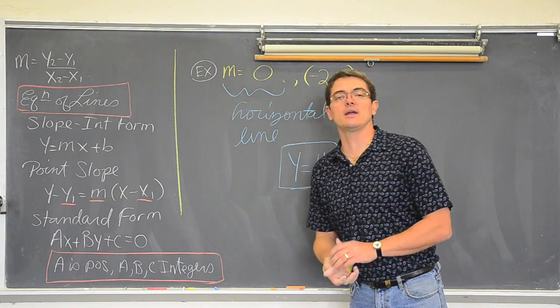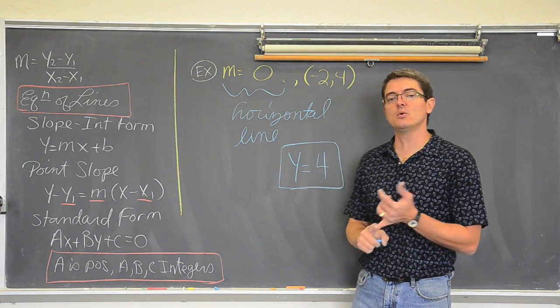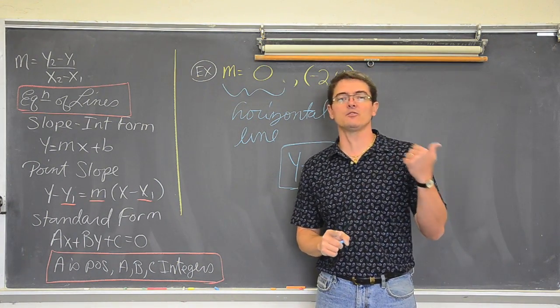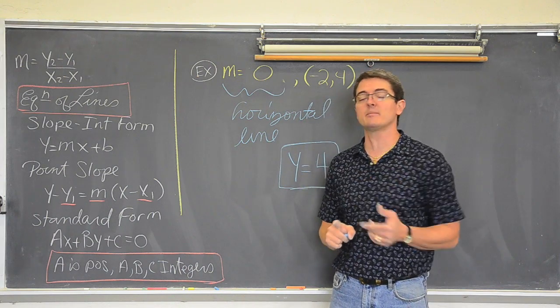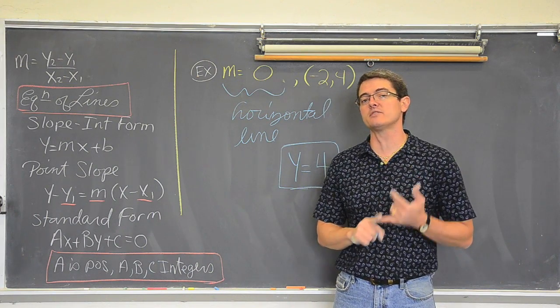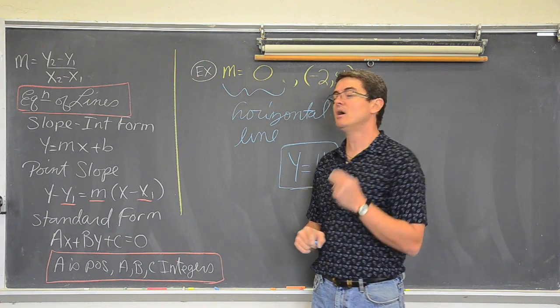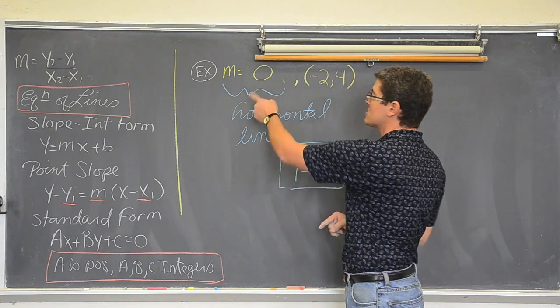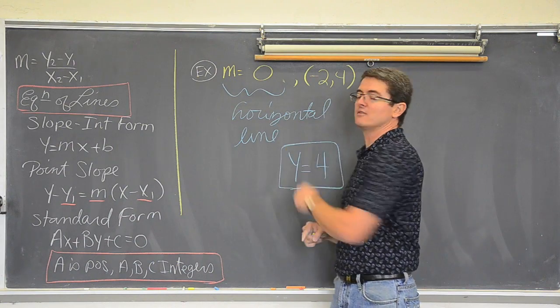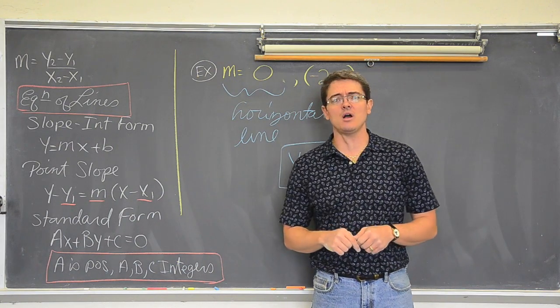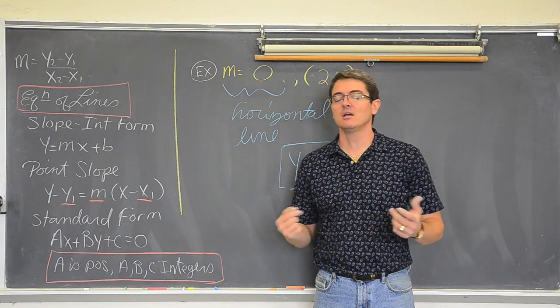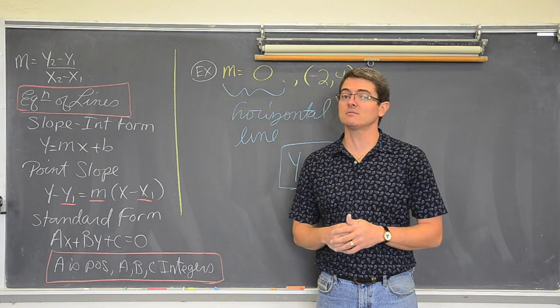And there is your answer. So there are two examples — one in the old video and one in this one about finding equations of a line. You need a minimum of a point and a slope, but there are these special cases. If you don't have these memorized, you are going to get those wrong.